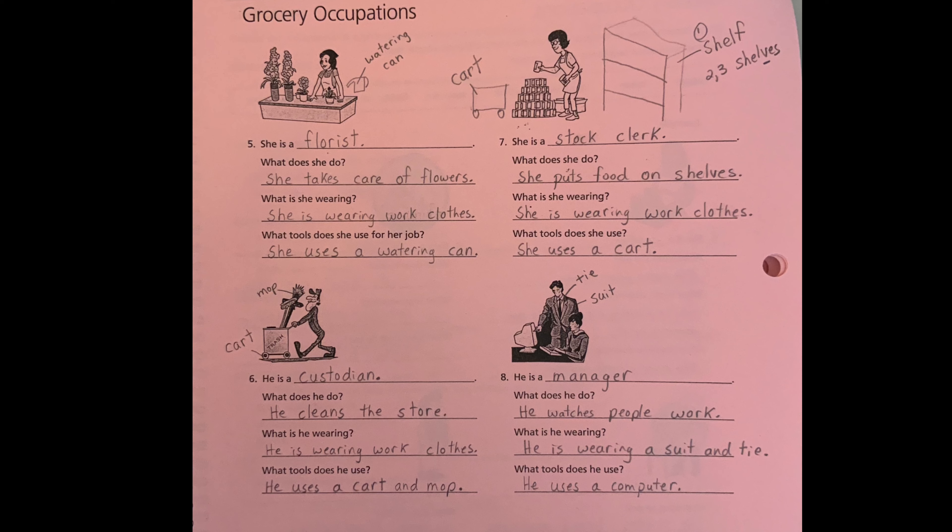Number seven. She is a stock clerk. What does she do? She puts food on shelves. Students, please in your book, on your paper, draw a shelf. One is called a shelf, and many are called shelves. So if you have an F, you need to change it to a V. If you want S, you need E-S. Please write this in your book.